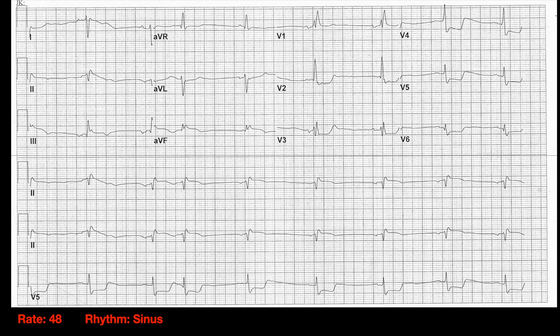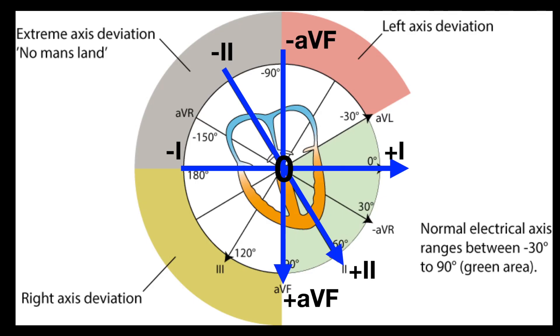So rate, rhythm, axis. Let's look at axis real quick. Lead one is negative. Lead two is mostly negative — the QRS is below the baseline for the most part. And in AVF it is mostly above the baseline, so positive. So down in one, down in two, up in AVF.